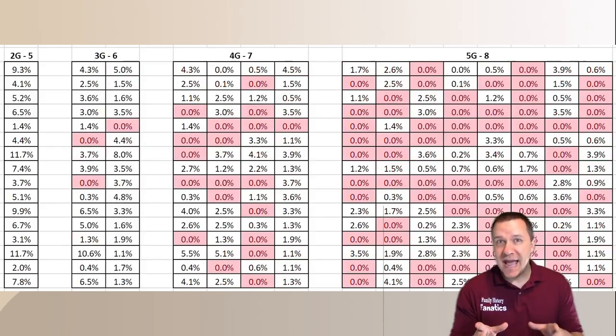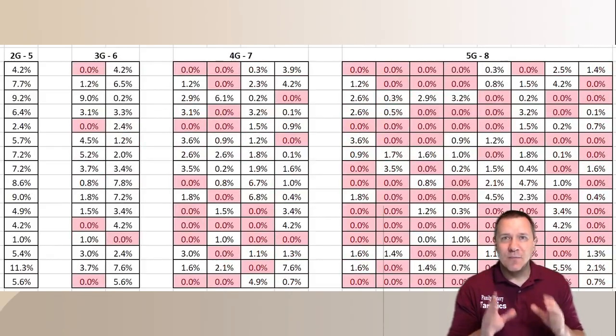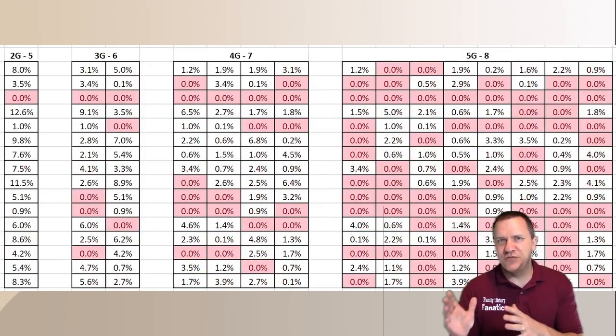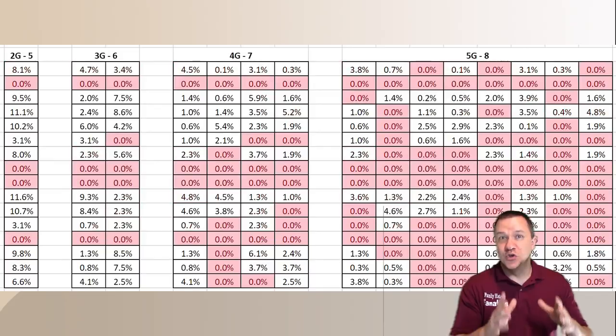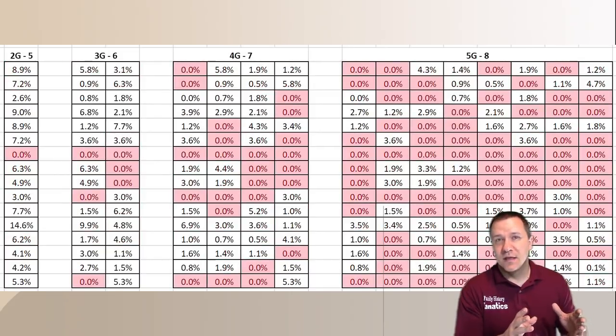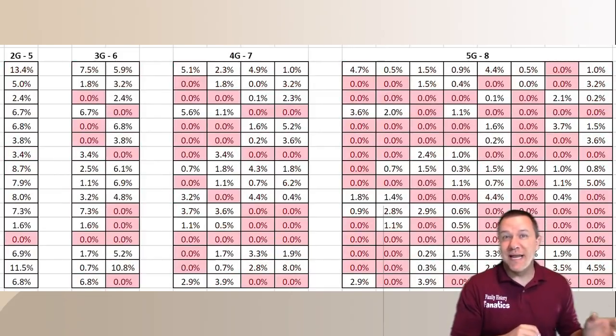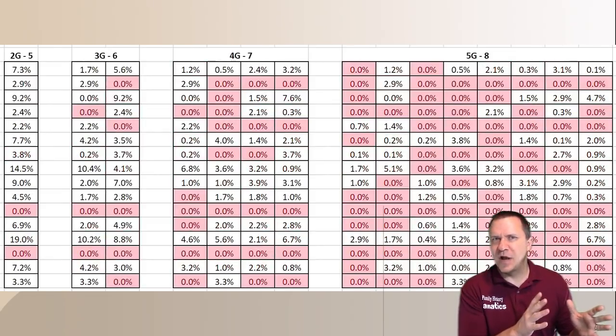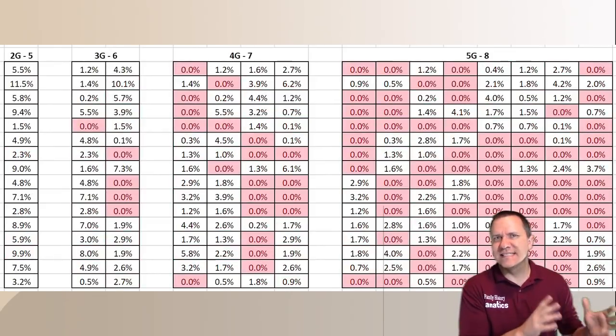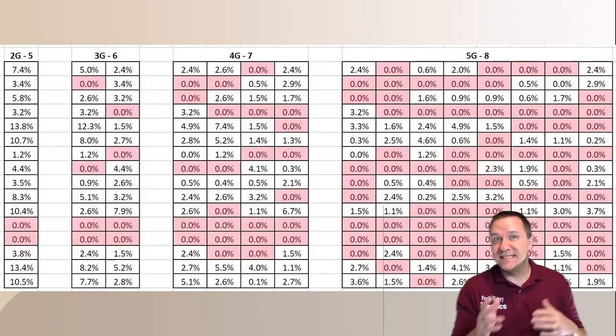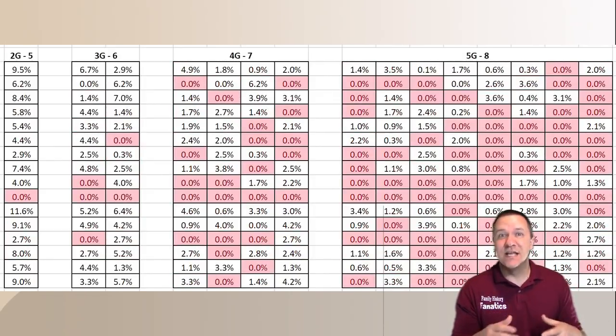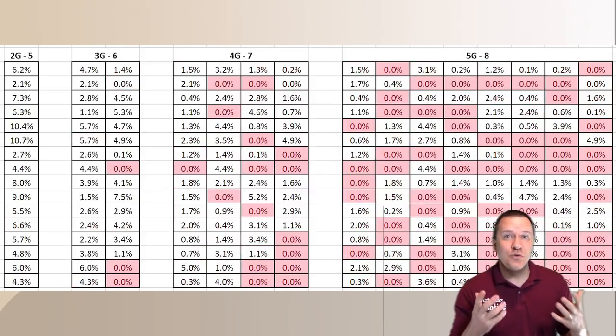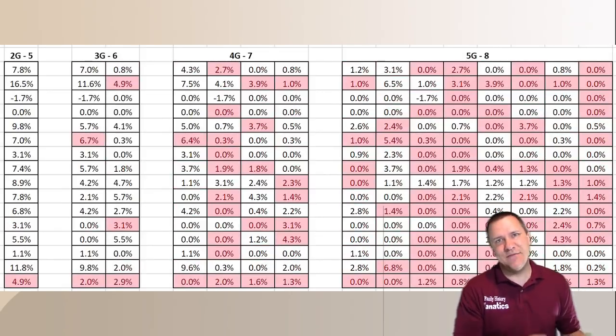Now by halving the amount of DNA each generation what we're doing with that probability curve is we're actually shifting that closer and closer to zero. In the sixth generation for sure and sometimes in the fifth generation the tail ends of that probability curve are actually less than zero. What this means is in those instances there are great-great-grandparents or great-great-great-grandparents that you don't inherit any DNA from.